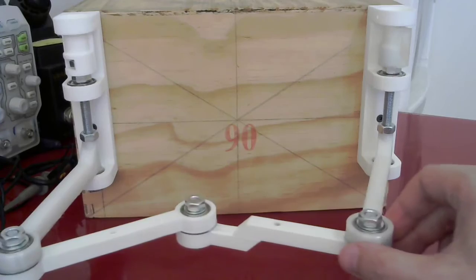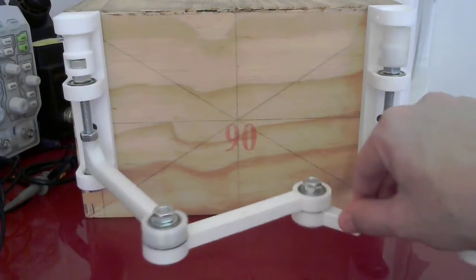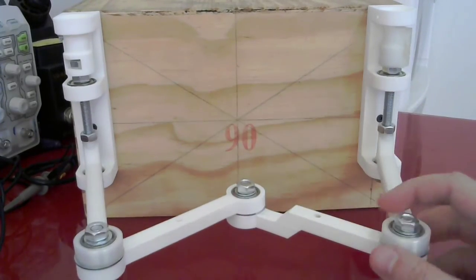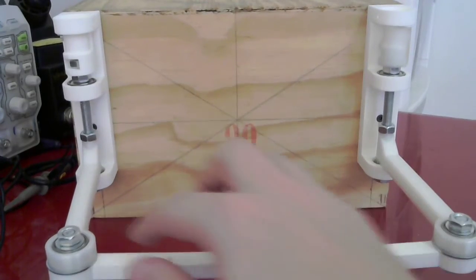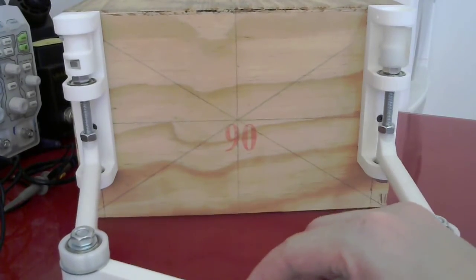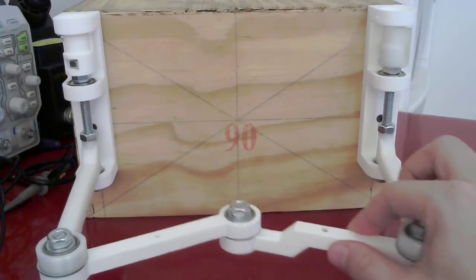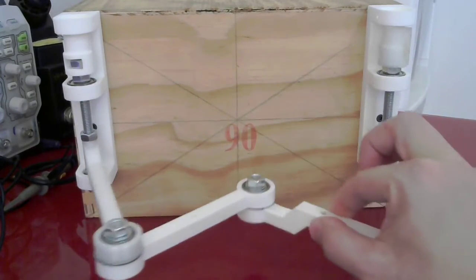So basically we move around like this, never crossing this point because that would be a singularity, because of course these two angles would be the same there and there, so it only moves around in this area here.